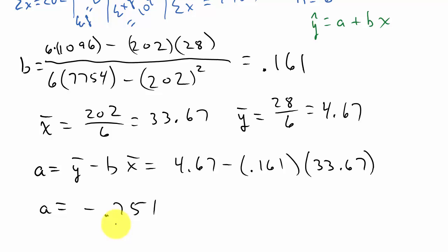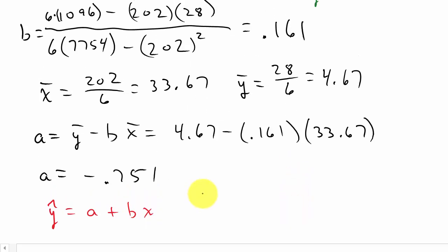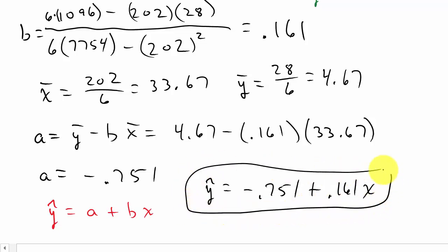Now we're ready to write the equation of our line. Remember, y hat is a plus bx. So we get y hat equals a, which is negative 0.751, plus b, which is 0.161 times x. So there's our equation for that data using the least squares method.